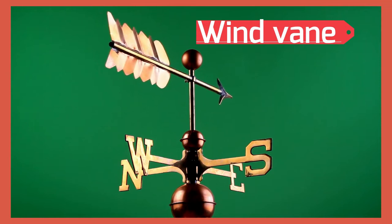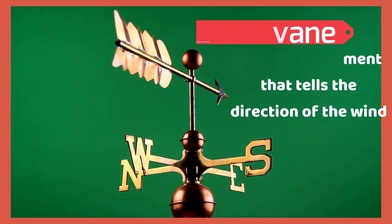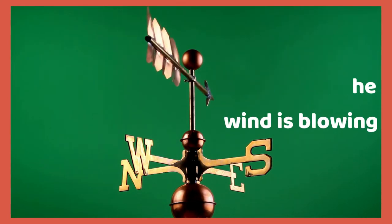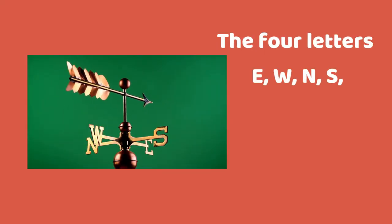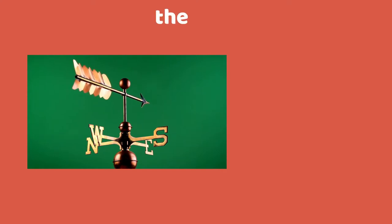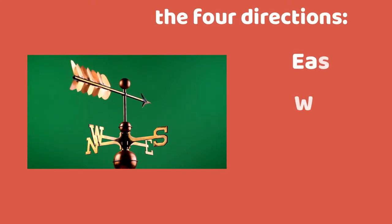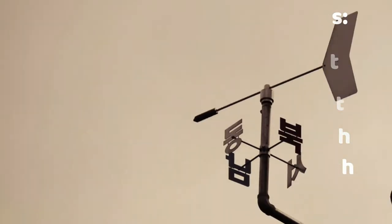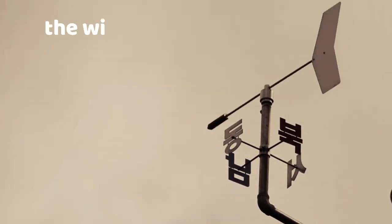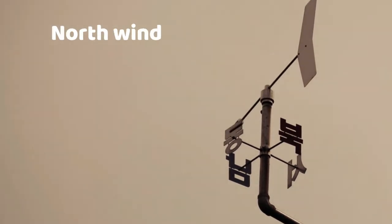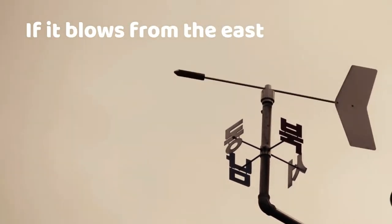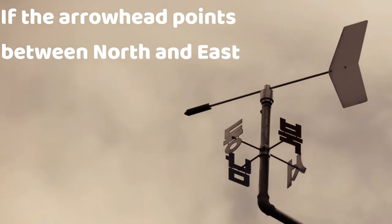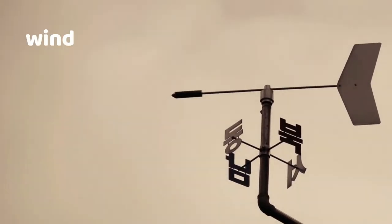A wind vane is a weather instrument that tells the direction of the wind. Wind direction is the direction from which the wind is blowing. The four letters E, W, N, and S represent East, West, North, and South. If the arrowhead of the wind vane faces north, we say the wind is blowing north — it is the north wind. If it blows from the east, it is the east wind. If the arrowhead points between north and east, we say the wind is blowing northeast.